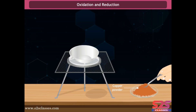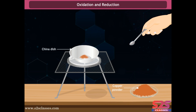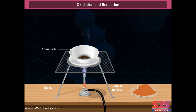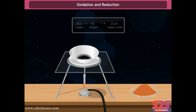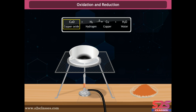Take about 1 gram of reddish-brown copper powder in a china dish and heat it over a burner. After some time, the surface of the powder is covered by a layer of black substance. When heated, copper combines with oxygen to form copper oxide — the copper gains oxygen and is oxidized. This process is called oxidation. If hydrogen gas is then passed over the heated copper oxide, the black coating turns brown again, because copper oxide loses oxygen and is reduced back to copper. This process is called reduction.